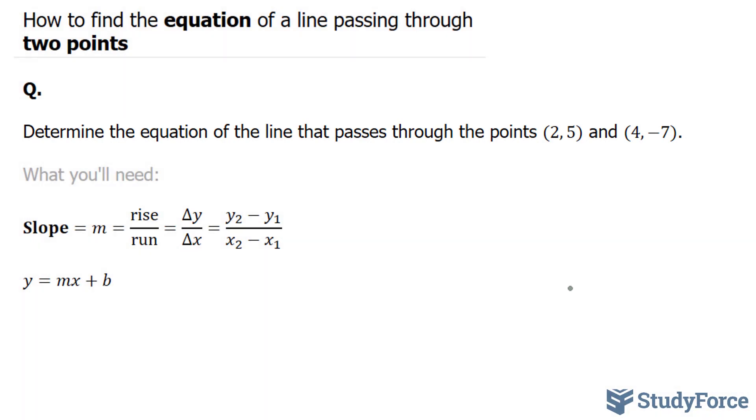What you'll need to be successful in this question are the following two formulas. The first one tells you how to find the slope, represented by the letter m, and you can use any one of these three formulas. Below you have the skeleton or template of a linear equation. After finding your slope and your y-intercept, you would replace the m and the b with those values and you would end up with your line.